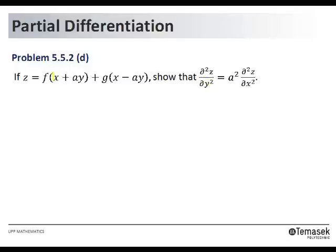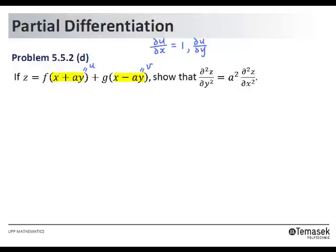To make things simpler, we let x plus ay equal to u and x minus ay equal to v. Let's evaluate some partial derivatives of u and v first. Partial u partial x is the partial derivative of x plus ay with respect to x, which is 1. Partial u partial y is a. Similarly, partial v partial x is 1 and partial v partial y is negative a.